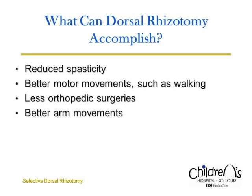What improvements can the patient expect from dorsal rhizotomy? Spasticity is reduced. In patients with spastic diplegia and hemiplegia, spasticity is almost invariably reduced. Sometimes spasticity is eliminated. Spasticity can be reduced permanently. It is important to know that in patients with spastic quadriplegia, dorsal rhizotomy can sometimes fail to reduce spasticity. Sitting, crawling, standing,